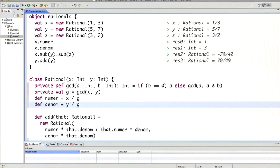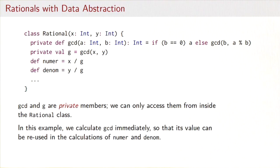Let's see whether anything changes. Well, my addition operation now yields the rational in simplified form and that's what we wanted. So note that gcd and g are private members of class rational. We can only access them from inside the rational class.